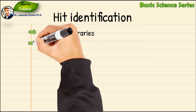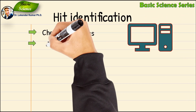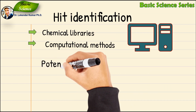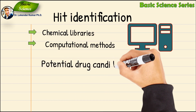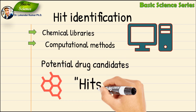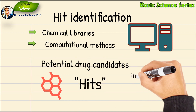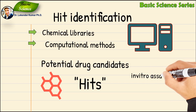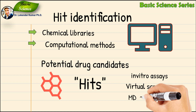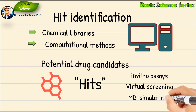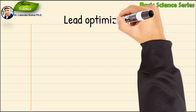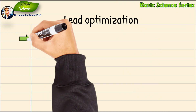Next is the hit identification. Researchers screen large chemical libraries or use computational methods to identify potential drug candidates that bind with the target. These initial compounds are known as hits. In this stage, various in vitro assays, virtual screening, and molecular dynamic simulations can be performed to identify the hits.